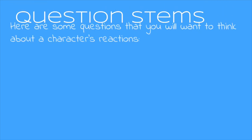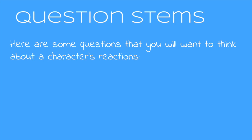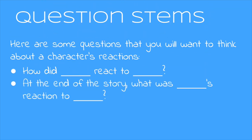Some questions that you might get that will mean you need to think about a character reaction are these. You might have a question like: how did the wolf react to the shepherd and the dog doing such a good job? We know the answer is he came up with a tricky way to get to the sheep anyway. Another question you might see is: at the end of the story, what was the lamb's reaction to the wolf? We know that the lamb got tricked by the wolf, so the lamb's reaction was to follow the wolf around.